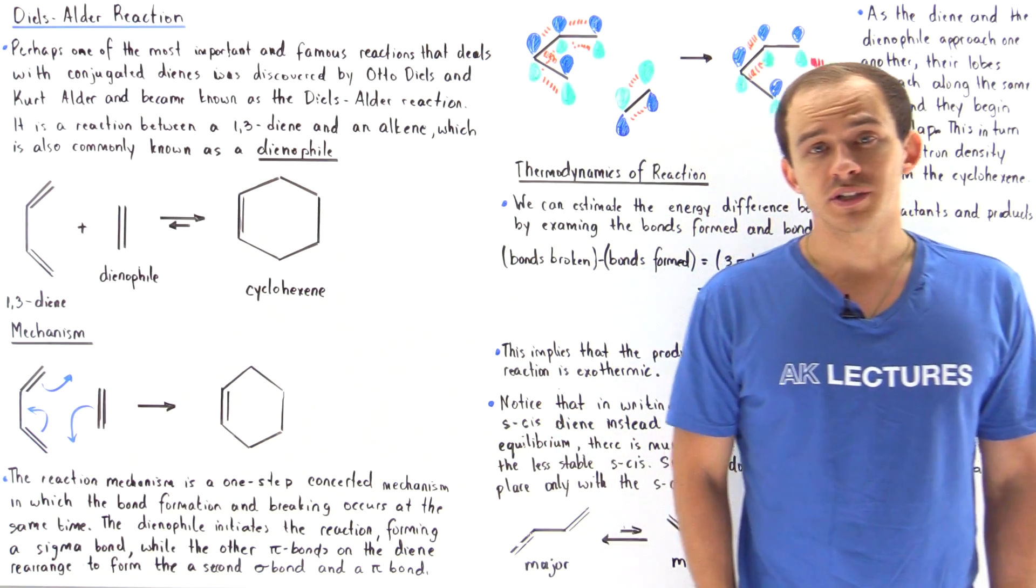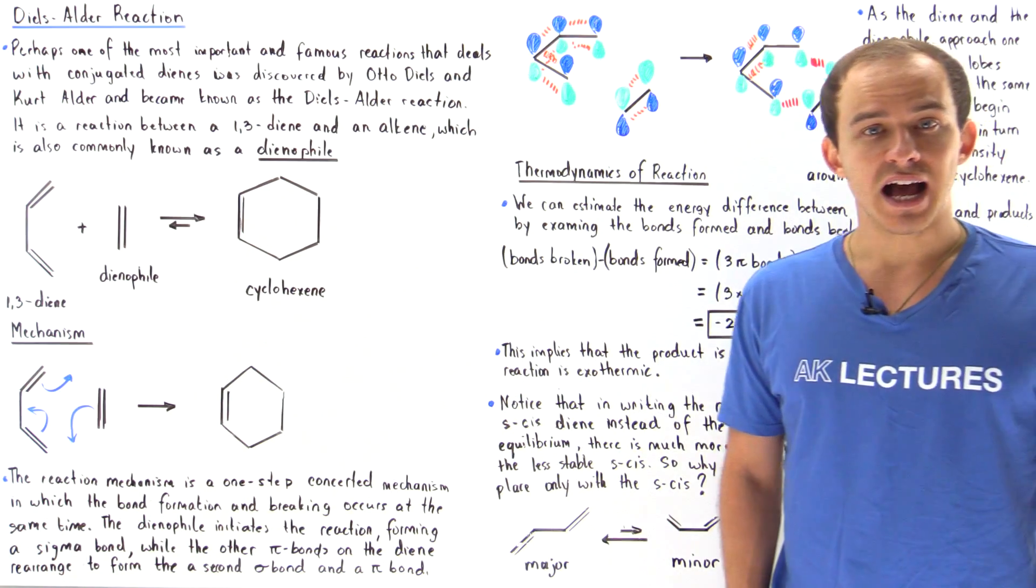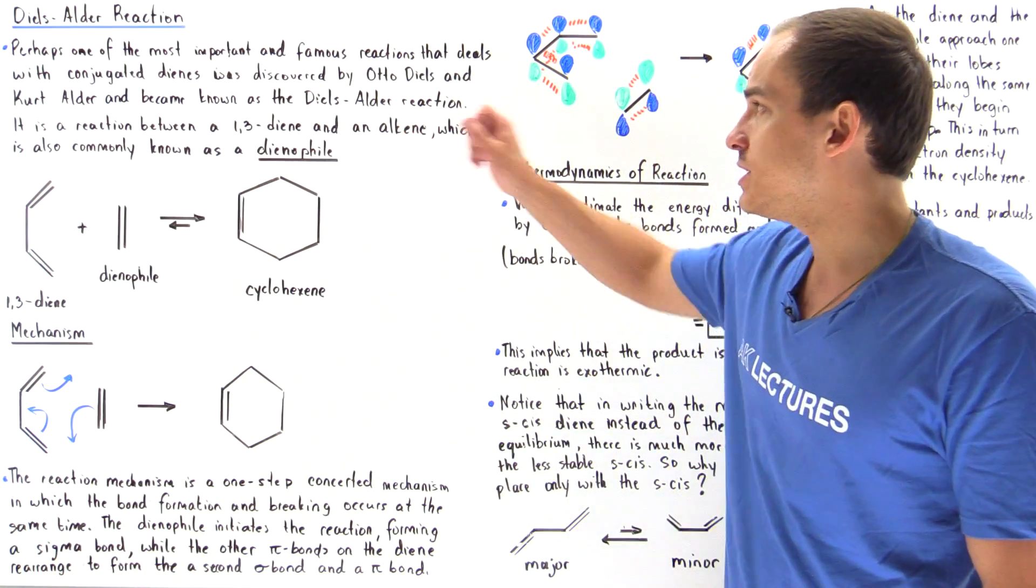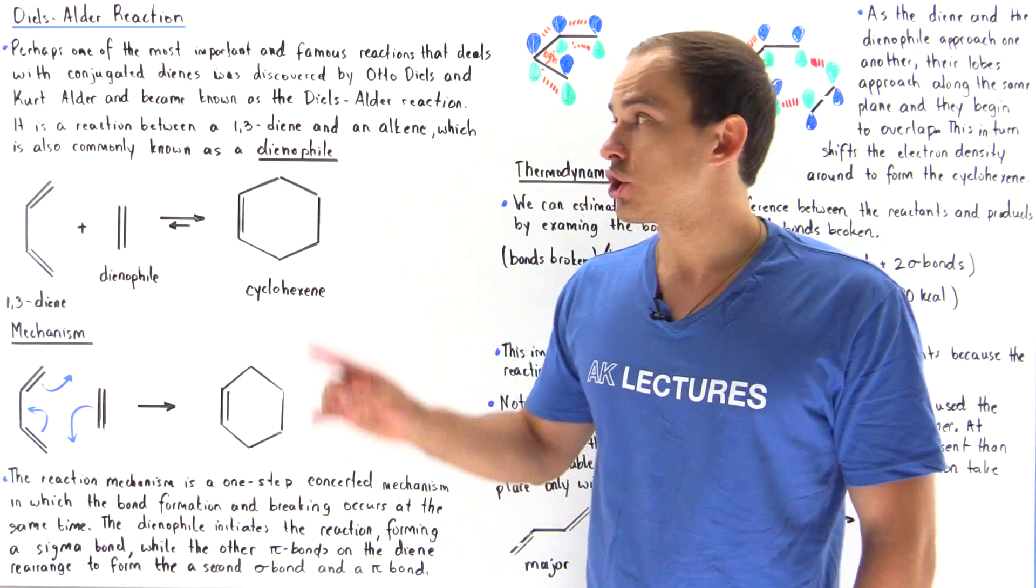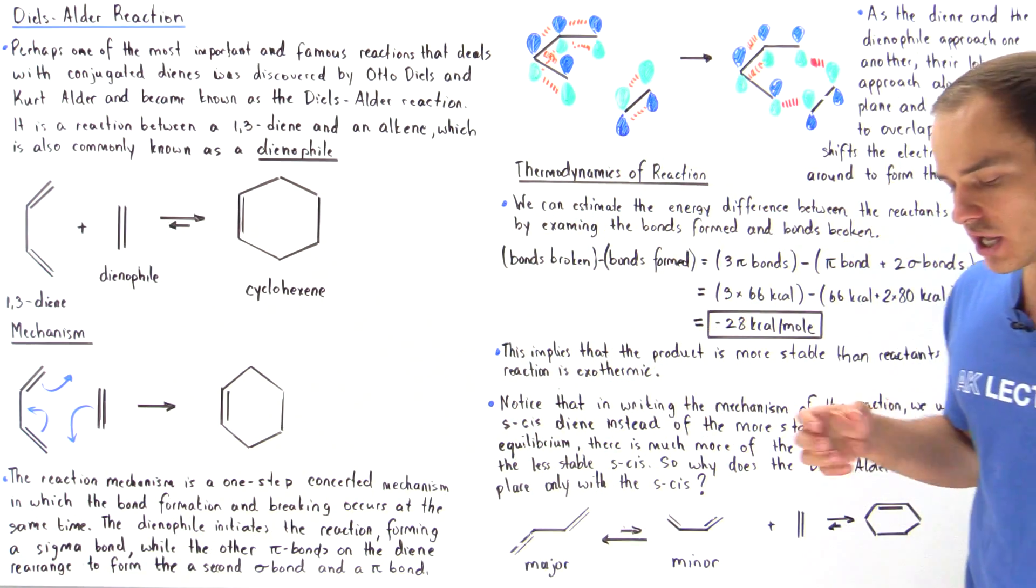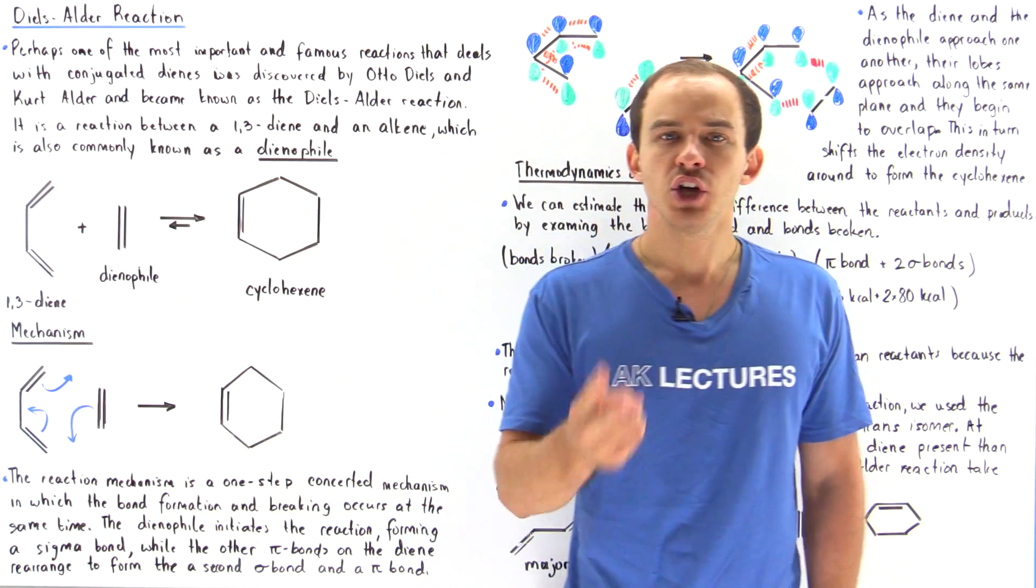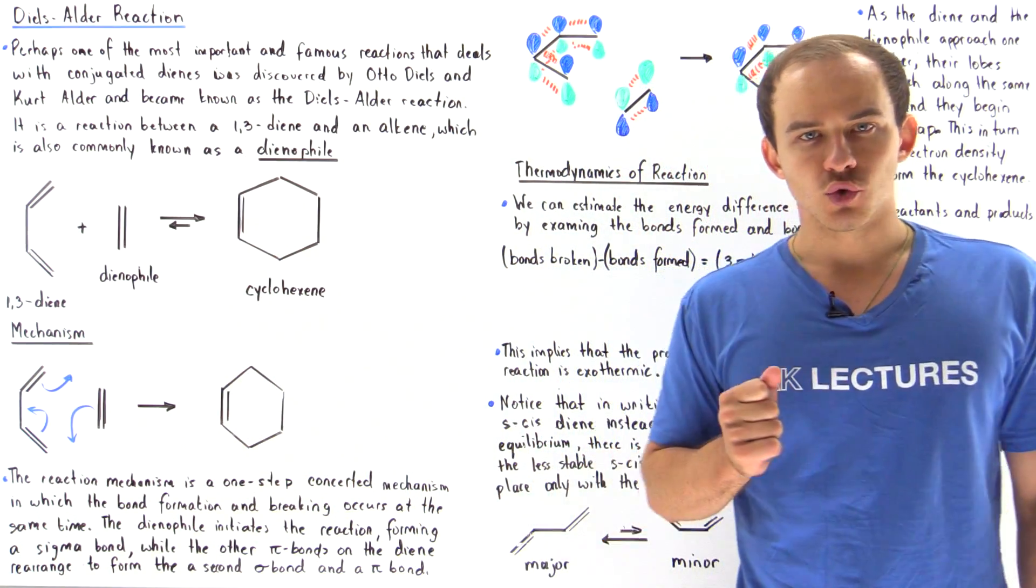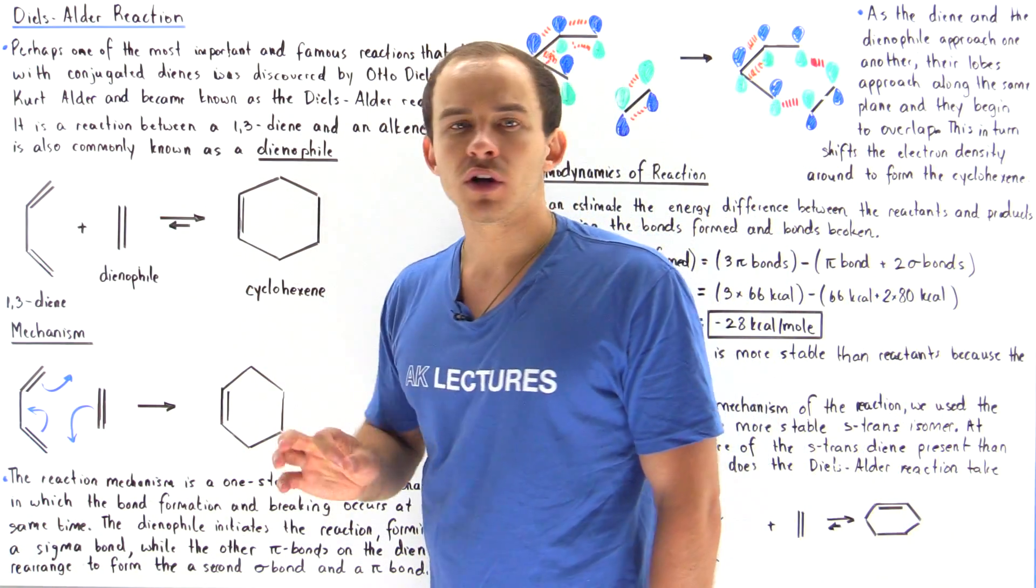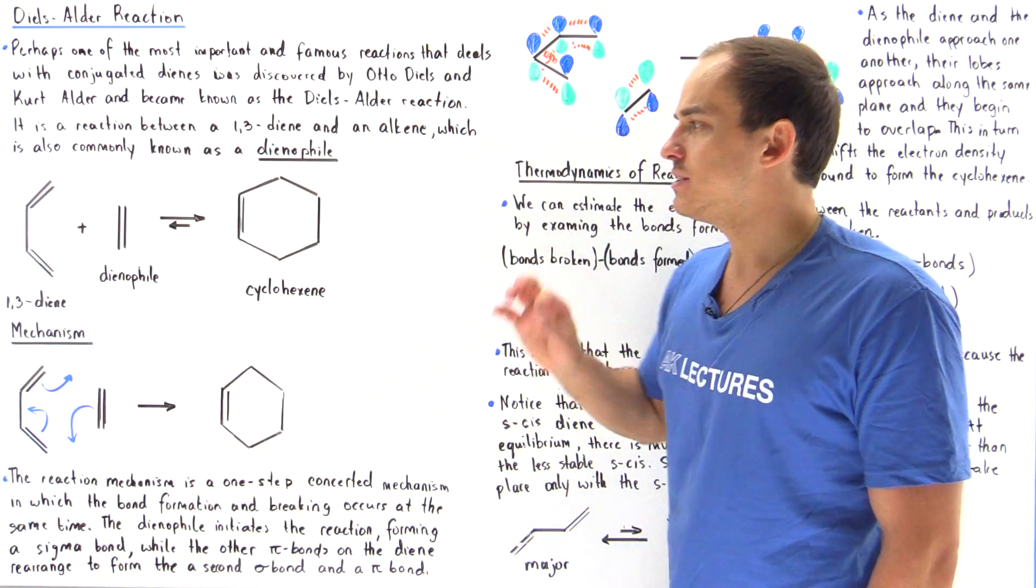Perhaps one of the most important and famous reactions that deals with conjugated dienes was discovered in 1928 by Otto Diels and his student Kurt Alder. This reaction became known as the Diels-Alder reaction. It's basically a reaction between two types of molecules: our 1,3-diene and our simple alkene, which is also known as the dienophile.